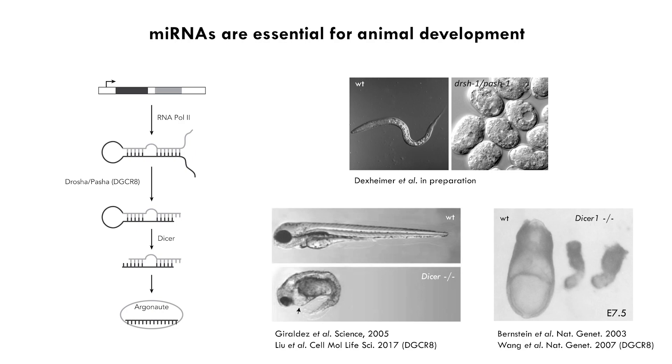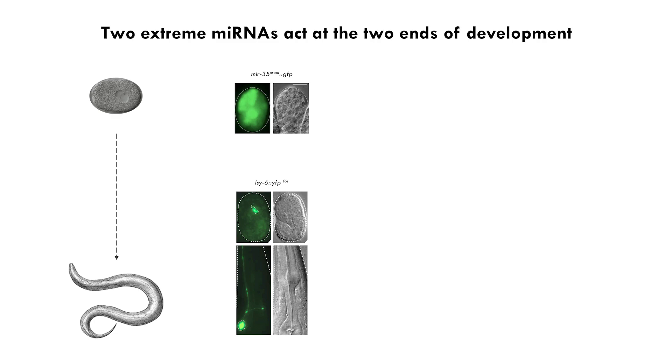Because microRNAs are clearly very important, there's been a huge effort to understand what individual microRNAs do. However, this has been challenging. We thought we would use the worm and take advantage of properties that enable us to see when and where microRNAs are expressed, and therefore make hypotheses about when and where they could act in development. I'm showing two examples of GFP-based reporters for two different microRNAs in C. elegans embryos — MIR-35, which is very broadly expressed in the early embryo, while a second microRNA, Lasy-6, is expressed in just one single cell that will develop into a neuron.